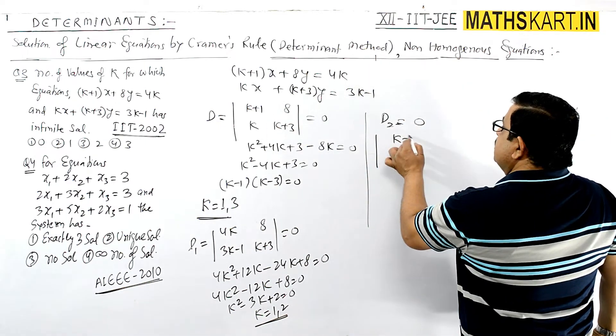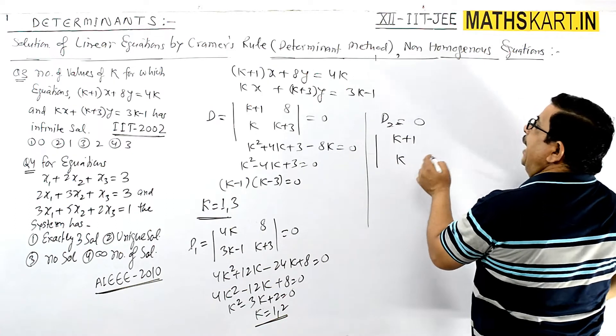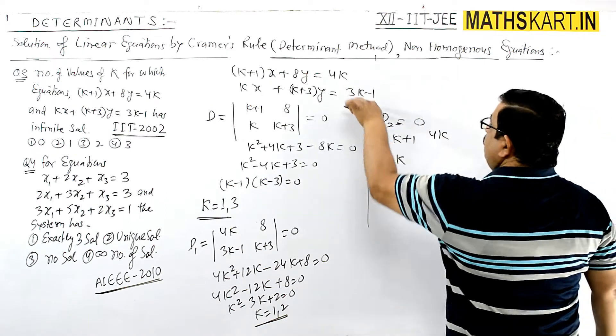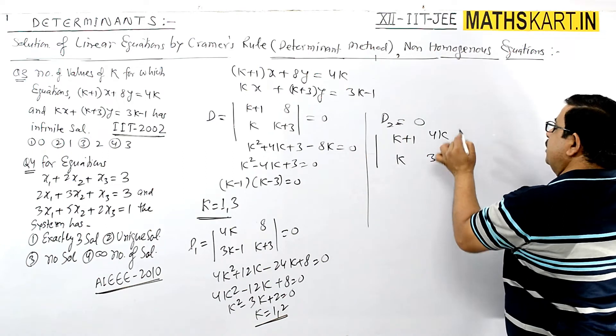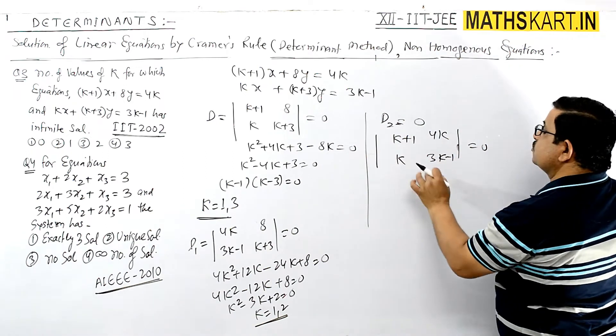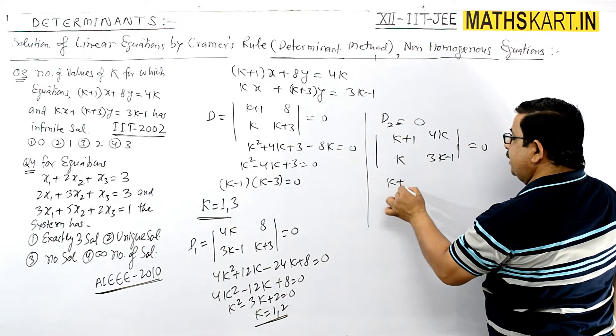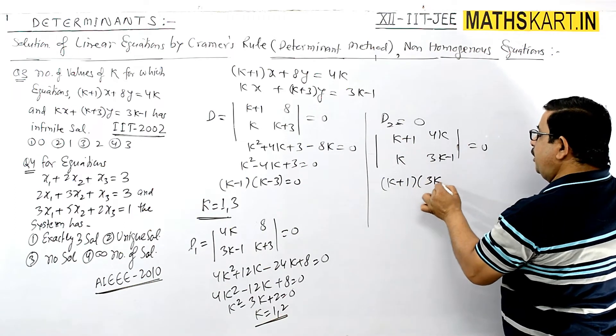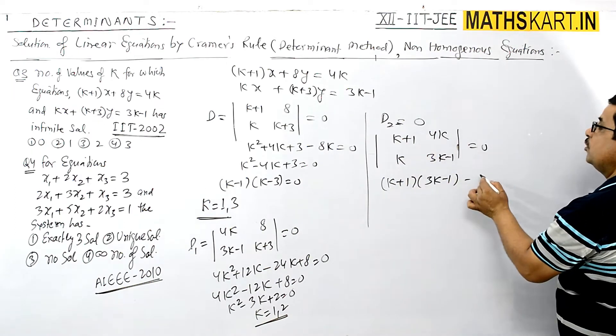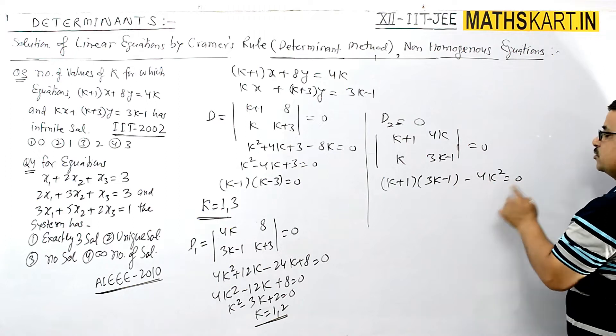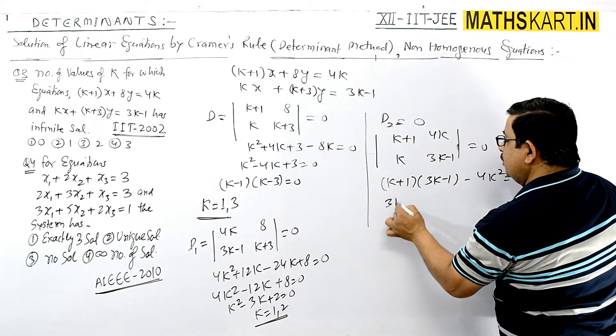So D2 = |k+1, 4k; k, 3k-1| = 0. Expanding: (k+1)(3k-1) - 4k² = 0. We'll simplify this expression.